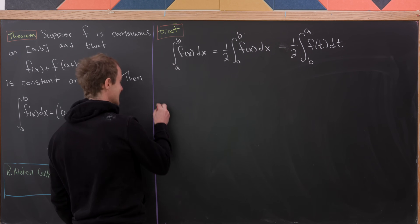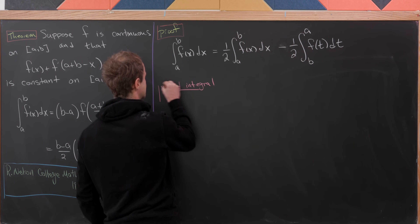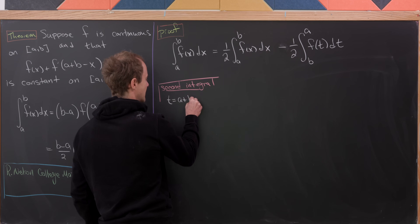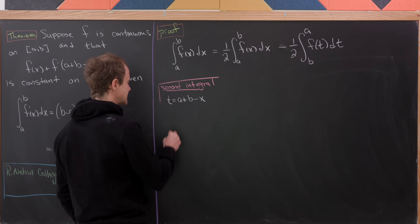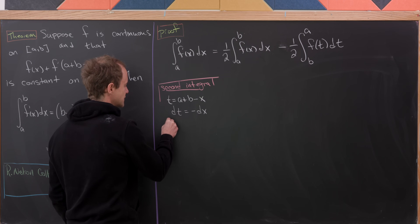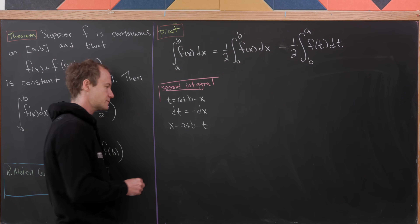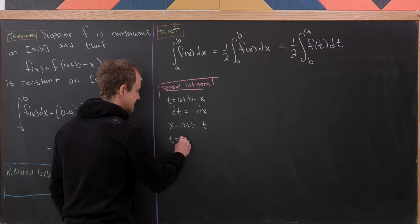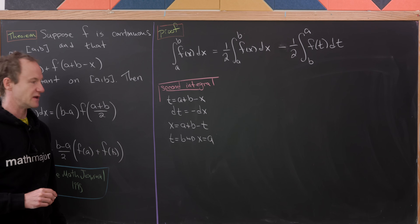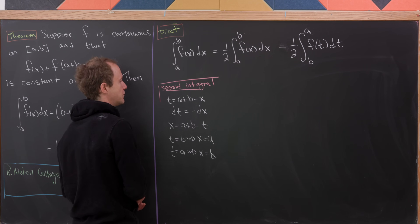In the second integral, we make a substitution: t = a + b - x. That means dt = -dx. It also means x = a + b - t, inverting the substitution formula. When t = b, x = a (since a + b - b = a), and when t = a, x = b.